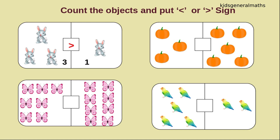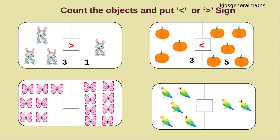Next we are going to count the next objects. One, two, three. How many pumpkins? Three pumpkins. One, two, three, four, five. How many pumpkins? Five pumpkins. While comparing these two numbers, which number is greater? Yes, five is greater. So the crocodile will open the mouth towards five. So we will say three is less than five.